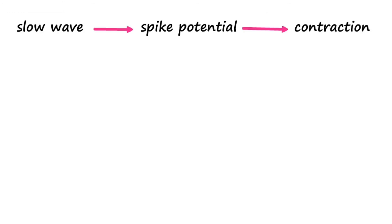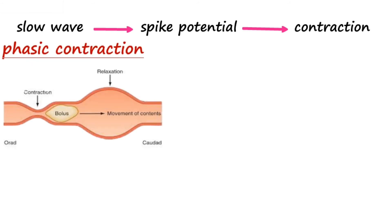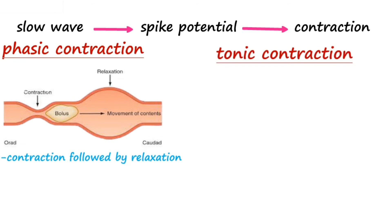There can eventually be two types of contraction. First is phasic contraction, which is a contraction followed by relaxation. Next is tonic contraction, which is a persistent contraction, like the ones we find in the sphincter.